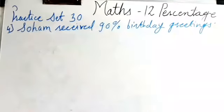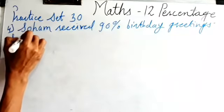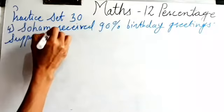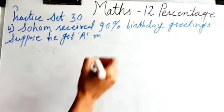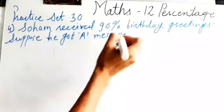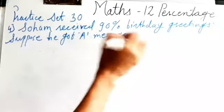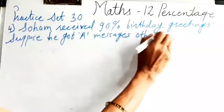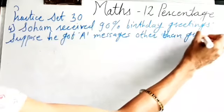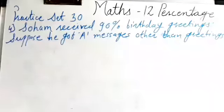90% means 90 upon 100. Let us suppose he got A messages other than greetings, because they ask how many other messages. So, let us suppose other messages are A — he got A messages other than greetings. Already greetings are 90% and the remaining are the other messages.